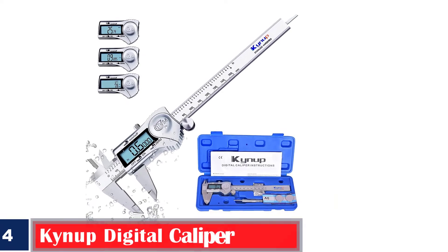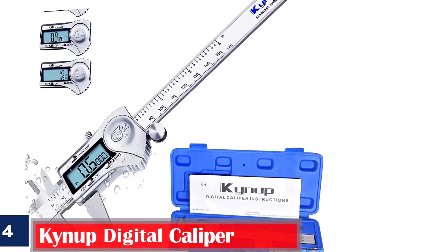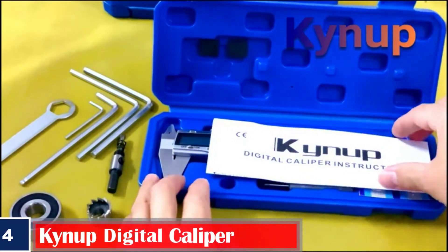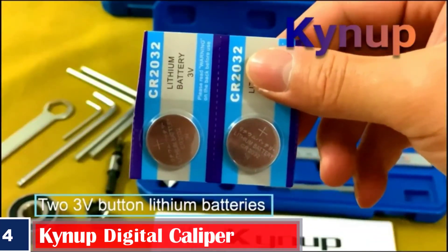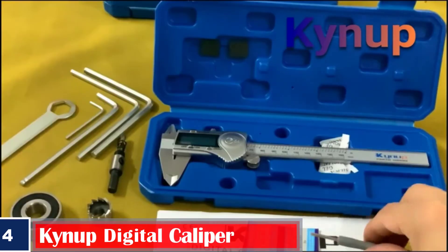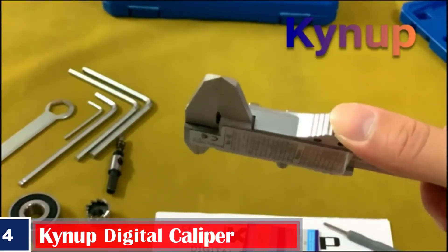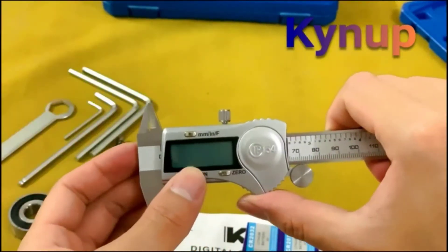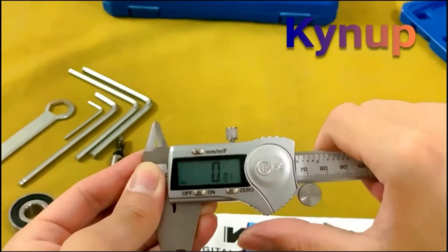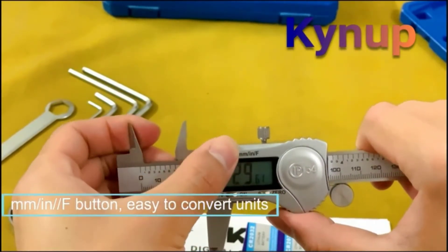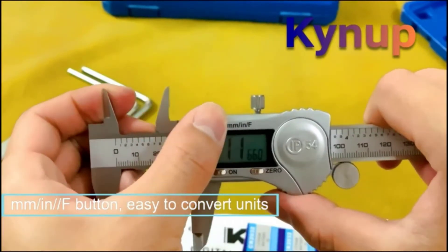Number 4, Best Waterproof. Kynup Digital Caliper. Kynup's Digital Caliper has an IP54-enabled waterproof protection design that keeps this device protected from dust and liquid. This measuring tool has a stainless steel frame and features easy unit conversions to the inch, metric, and fraction to offer the desired unit system readings. It measures up to 6 inches for easy reading and is fitted with a large LCD screen for better visibility.